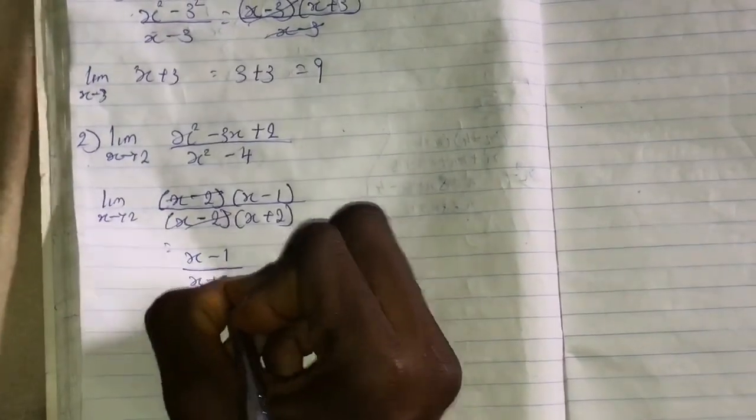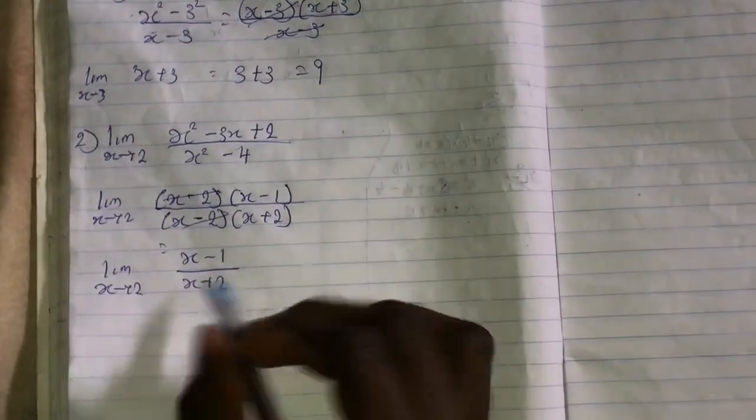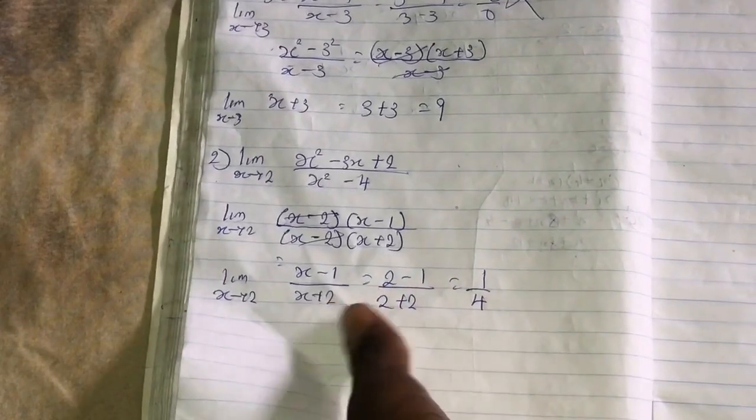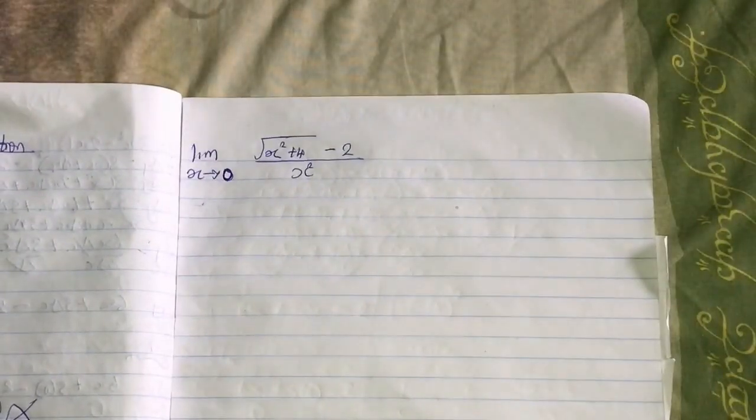And you are told to limit x towards 2, so you slot in 2. That'll be 2 - 1. The answer to this is 1/4.